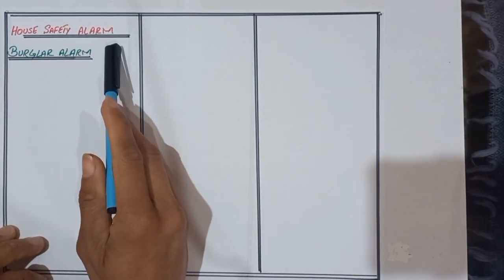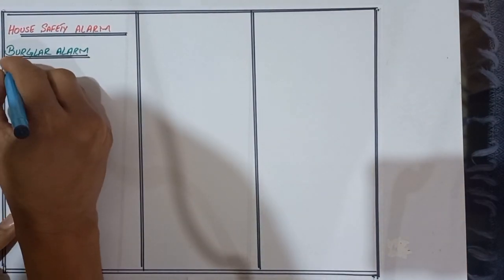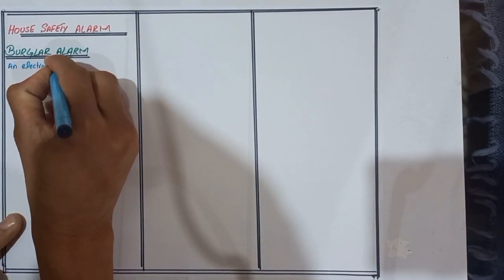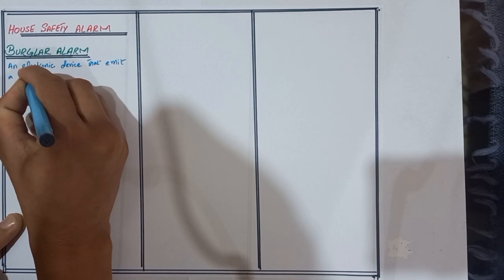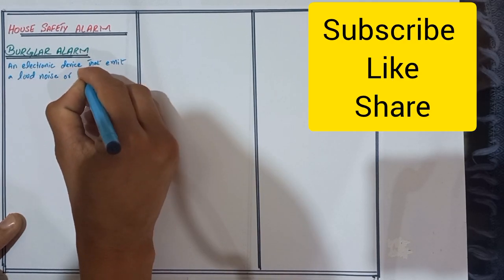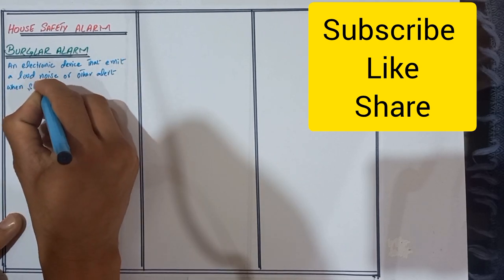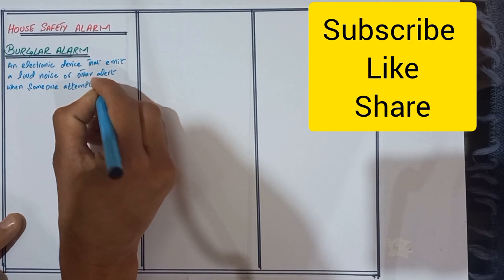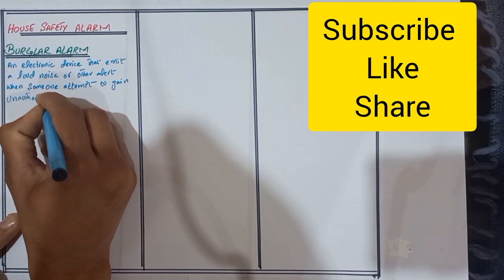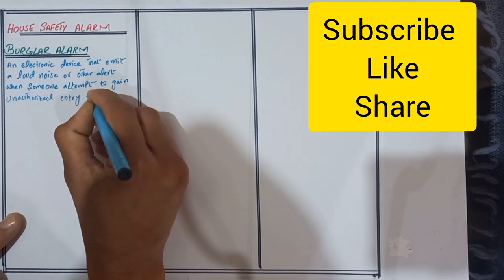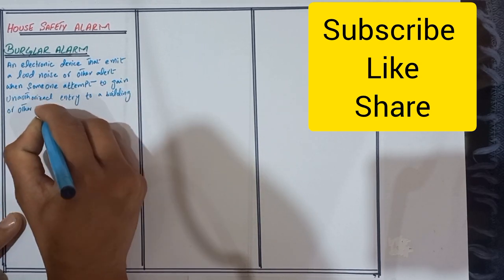Today we discuss the topic that is House Safety Alarm. In House Safety Alarm we commonly use the Burglar Alarm. In Burglar Alarm we define it as an electronic device that emits a loud noise or other alert when someone attempts to gain unauthorized entry to a building or other premises.